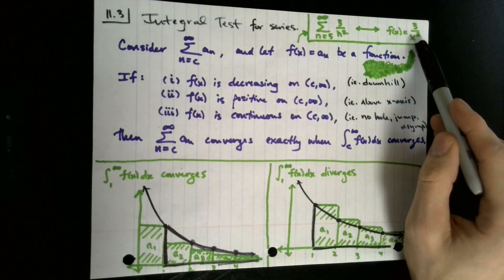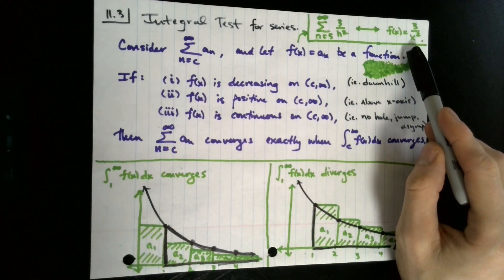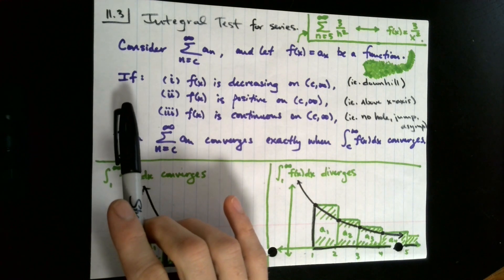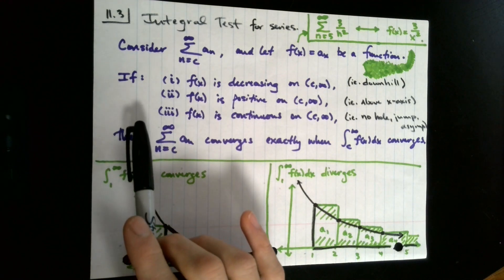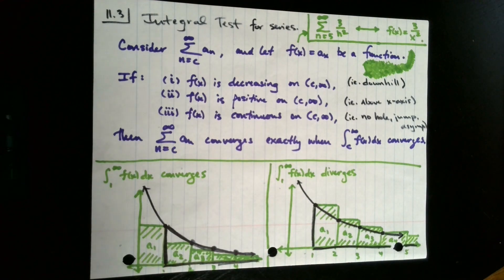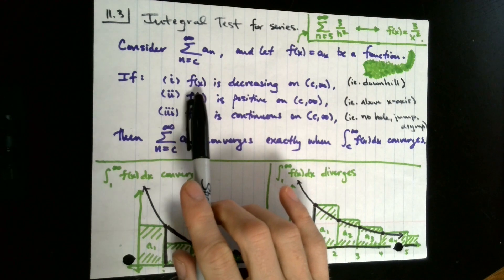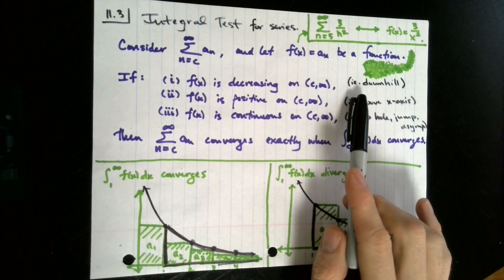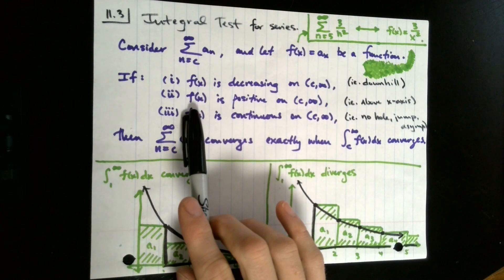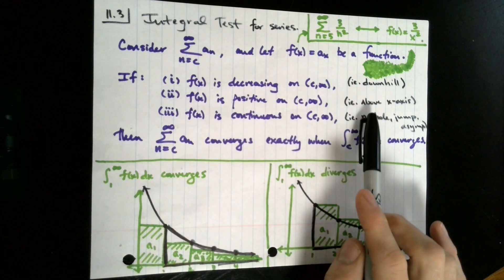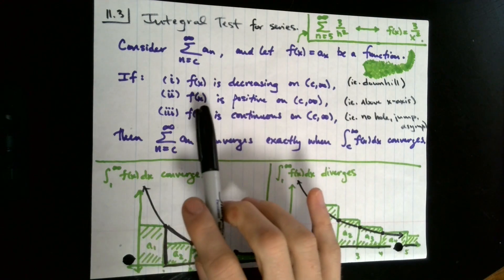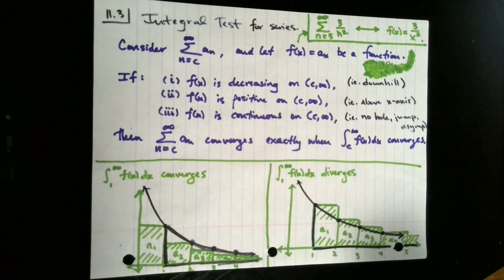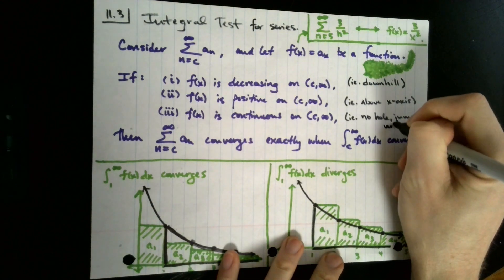When we get our function by taking the terms of our series and replacing n with x, we have three things to check. If these three things are all true about our function, then we can apply what is referred to as the integral test. The three things we need to check are: one, that the function is decreasing — meaning the graph is going downhill. Two, that the function is positive — meaning the graph lives above the x-axis. And three, that the function is continuous — meaning it is free of holes, jumps, or vertical asymptotes.